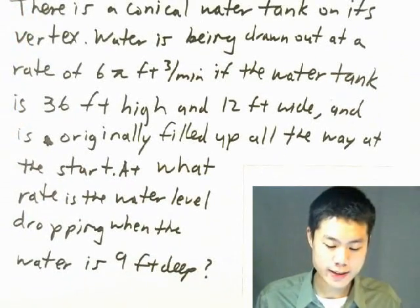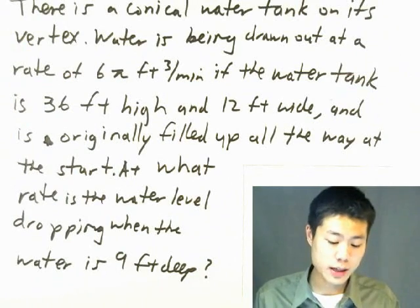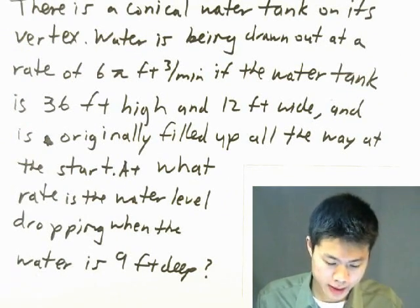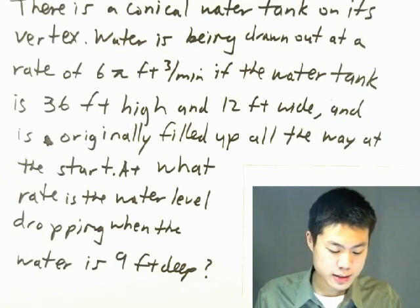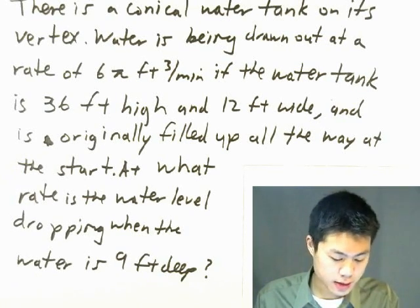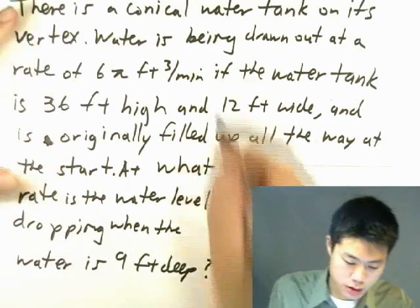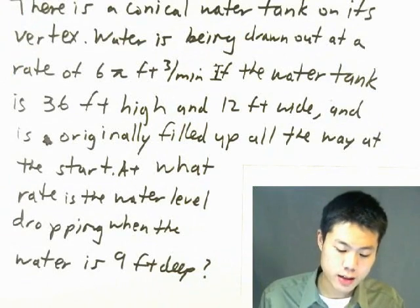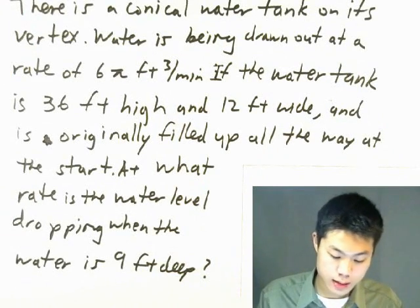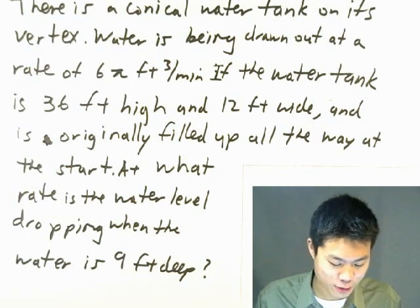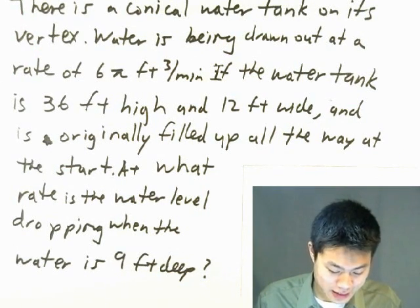It's a funnel shaped water tank. And you have water in here at some level. Okay, so that's a conical water tank. Cone, conical. Okay, so there's a conical water tank on its vertex. At what rate is the water level dropping when the water is 9 feet deep?